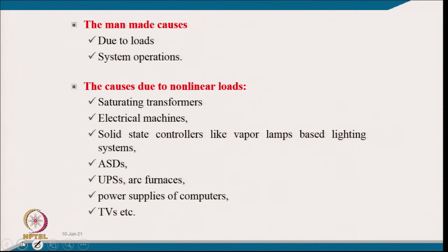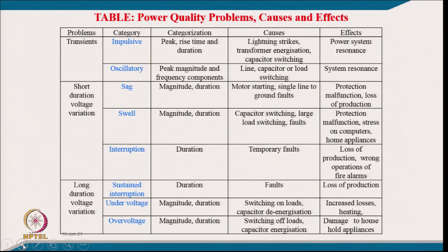A summary table covers power quality problem categories, causes, and effects. Transient problems can be impulsive or oscillatory in nature — quantified by peak rise — and are caused by lightning strokes, transformer energization, or capacitor switching. They cause power system resonance. Oscillatory transients can be quantified by peak or frequency components and are caused by line switching, capacitor switching, or load switching, also causing system resonance.